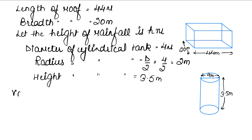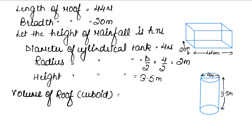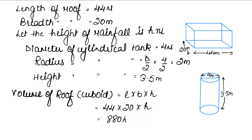Volume of roof — इसे cuboid कह सकते हैं क्योंकि यह cuboid की shape में है। Cuboid का formula होता है length × breadth × height। तो length 44 meter, breadth 20 meter, और height h है, तो volume of roof = 880h meter cube।